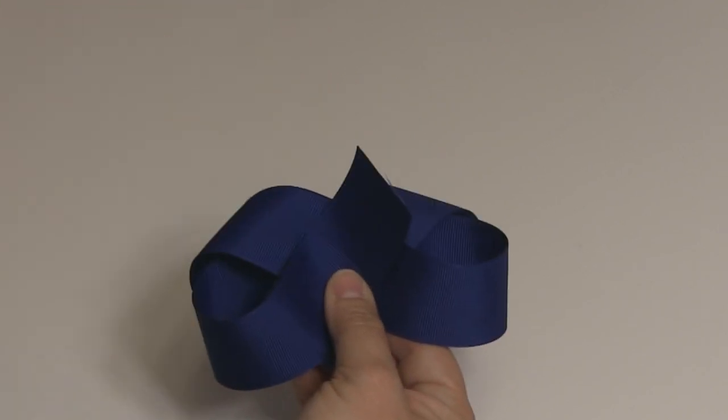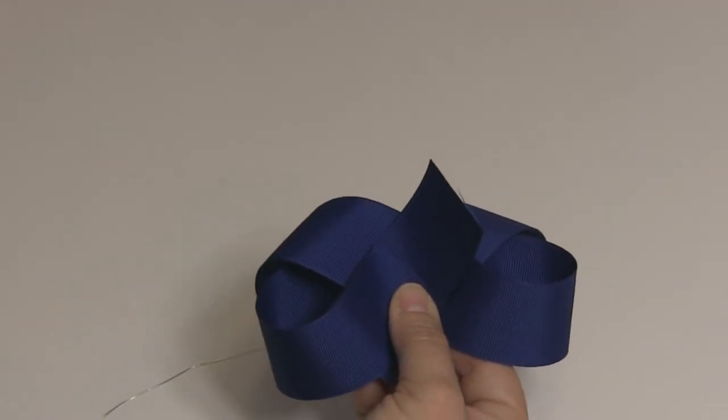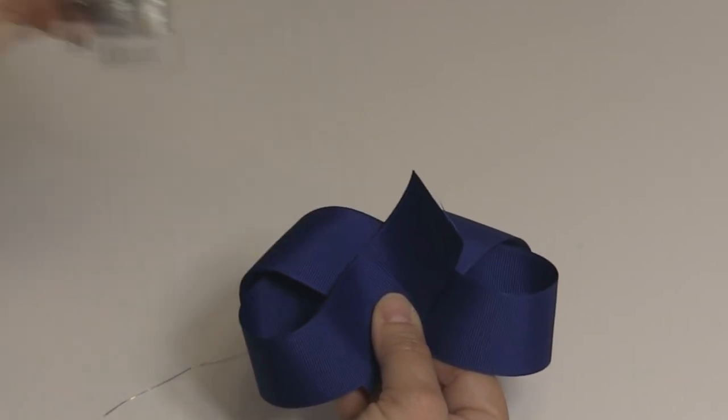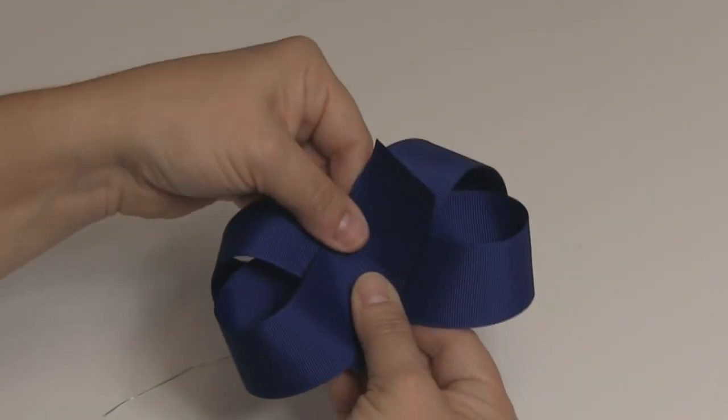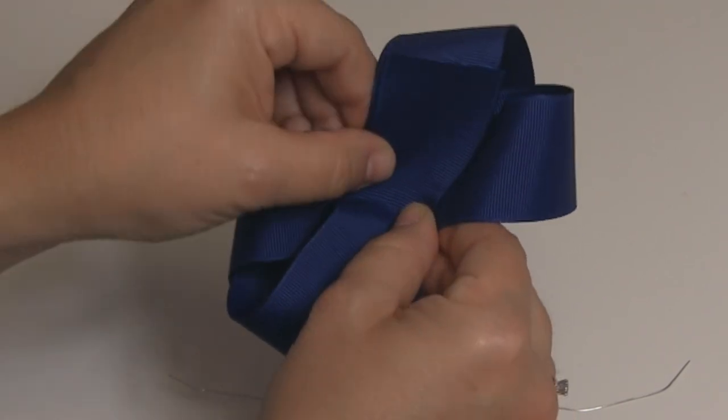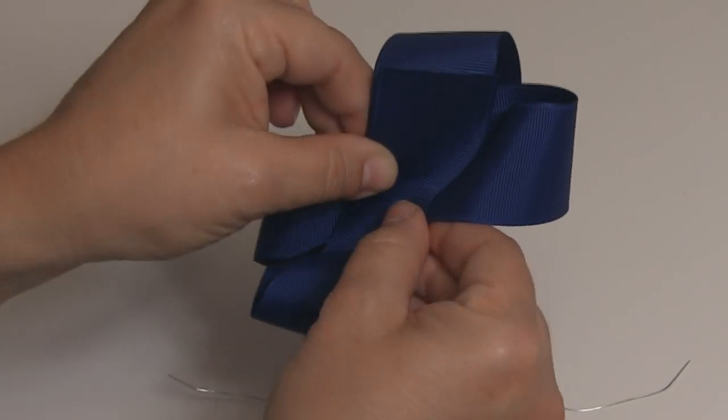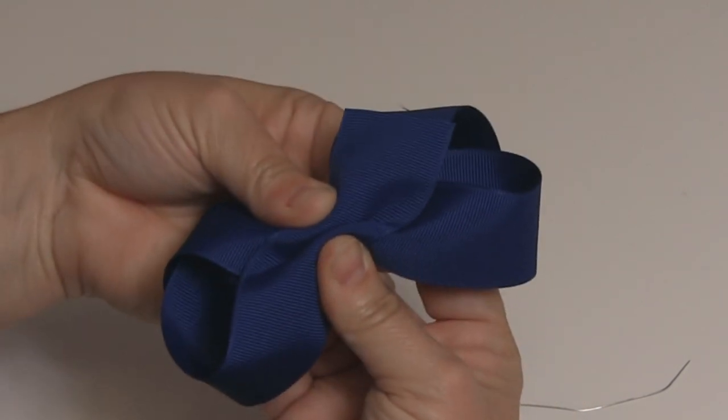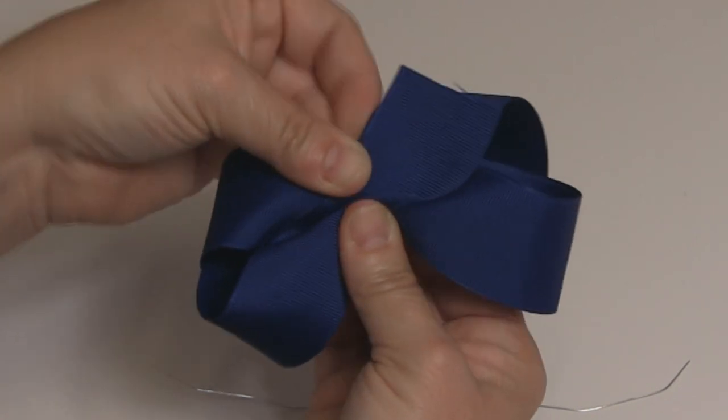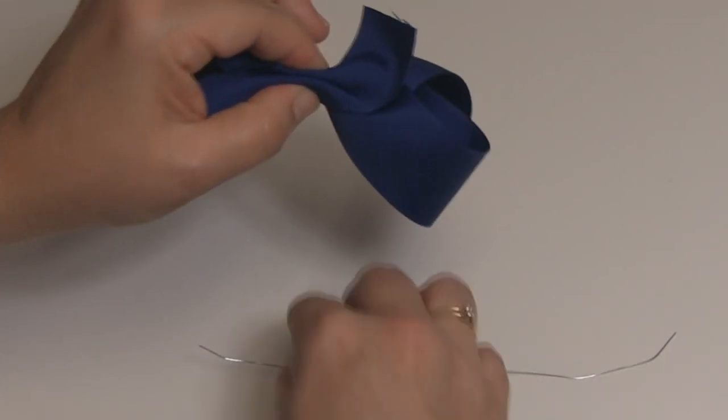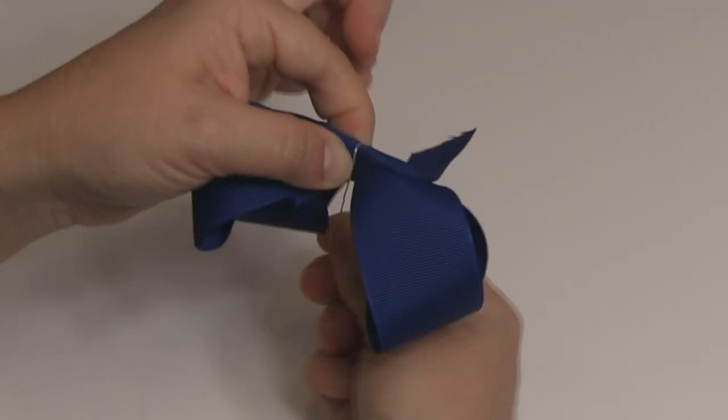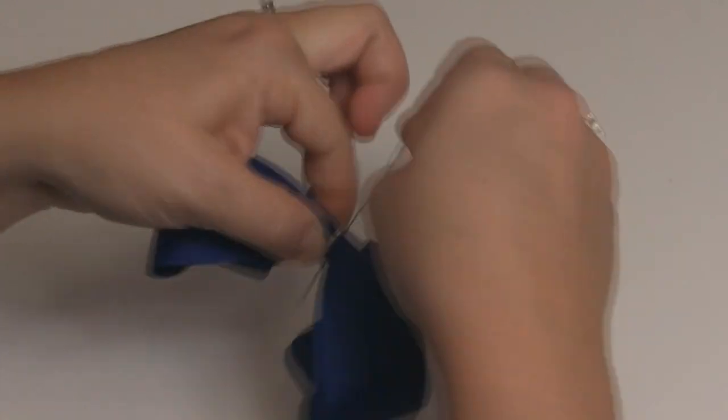Now we're going to take our wire, which I already cut a piece of. This is just 26 gauge floral wire, that's all I use. So I have my wire ready. The first thing I'm going to do is crease the middle. So I'm going to fold up right into the middle, and then I'm going to fold my sides down. And then I'm just going to take my wire and wrap it around the center of the bow a couple of times.